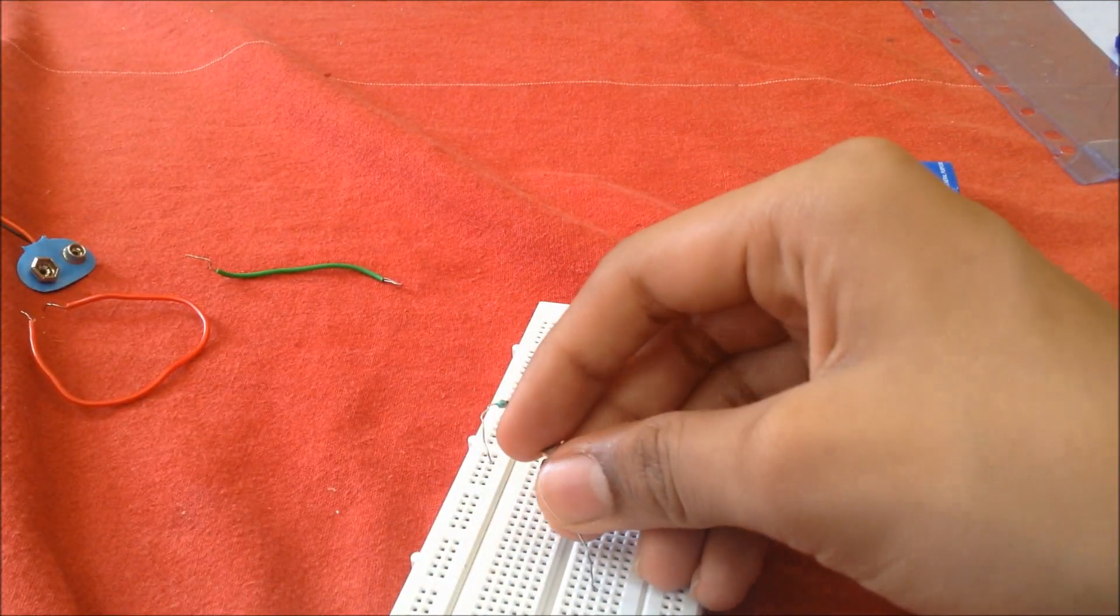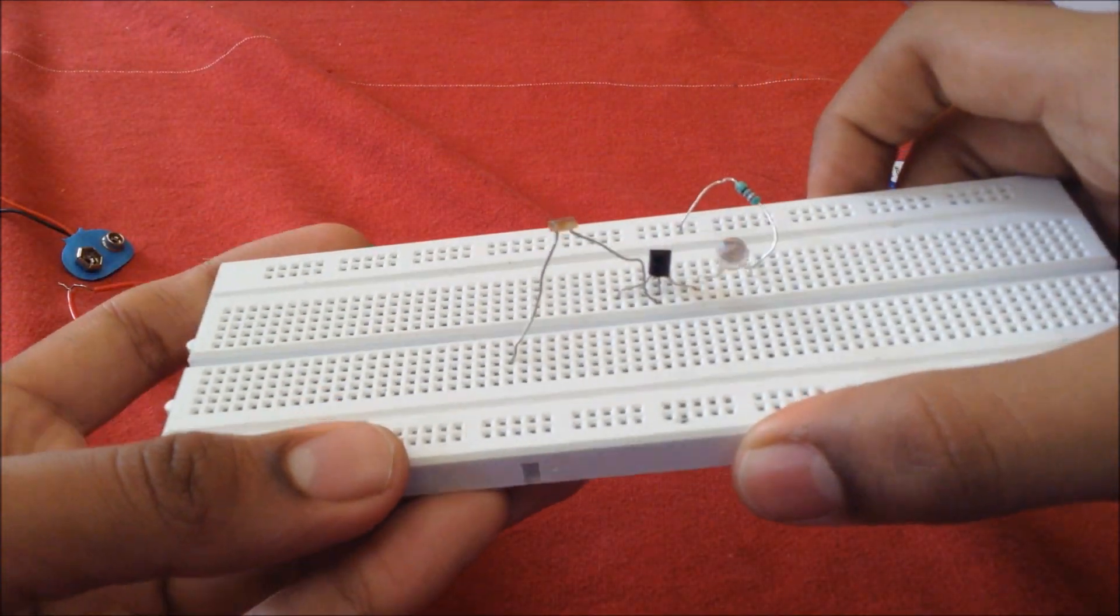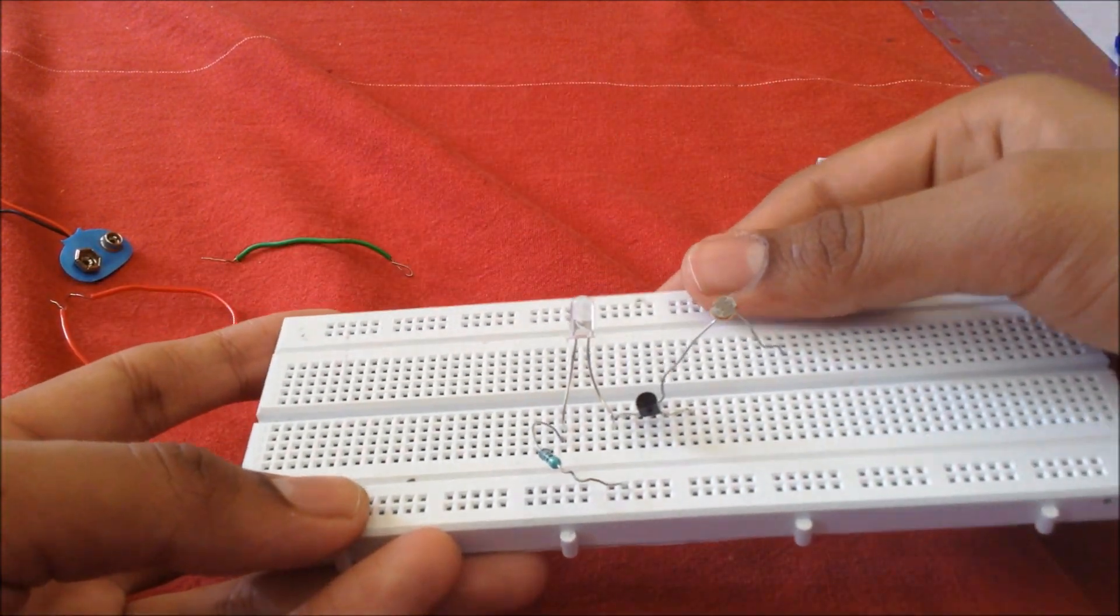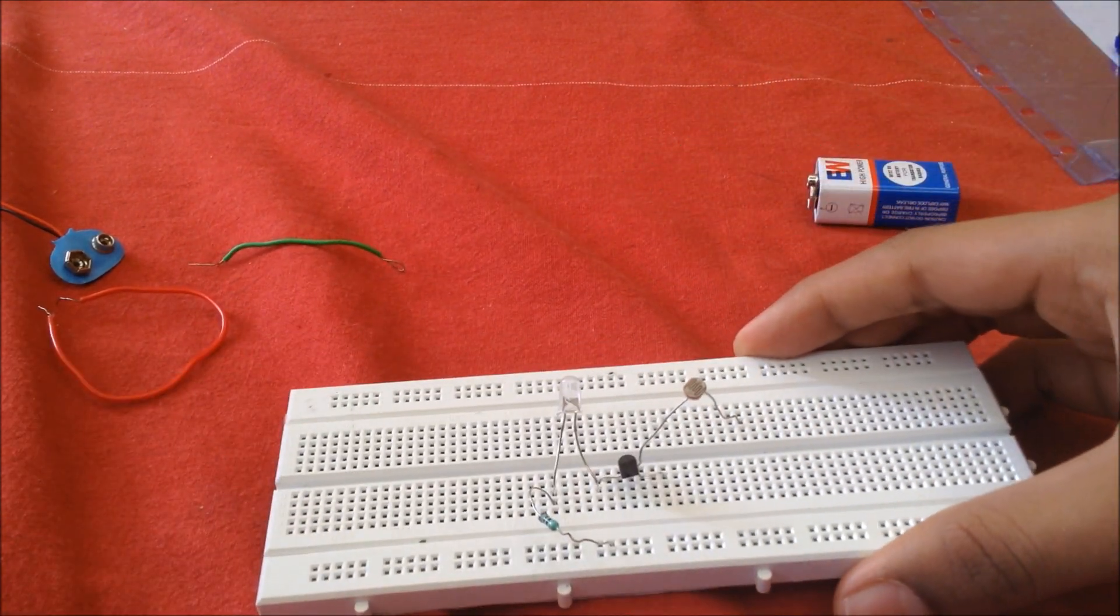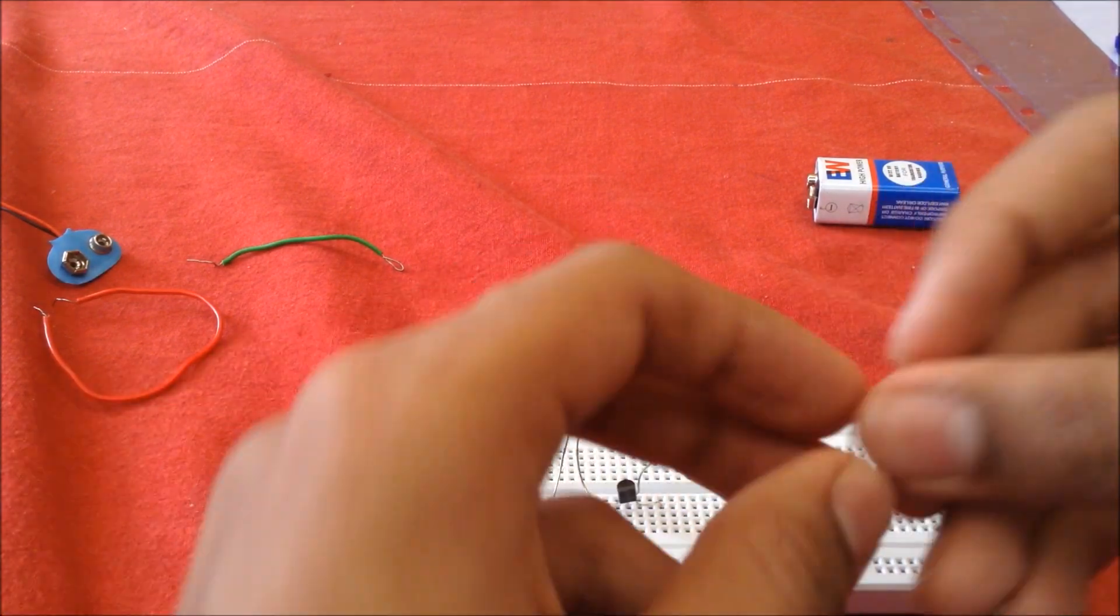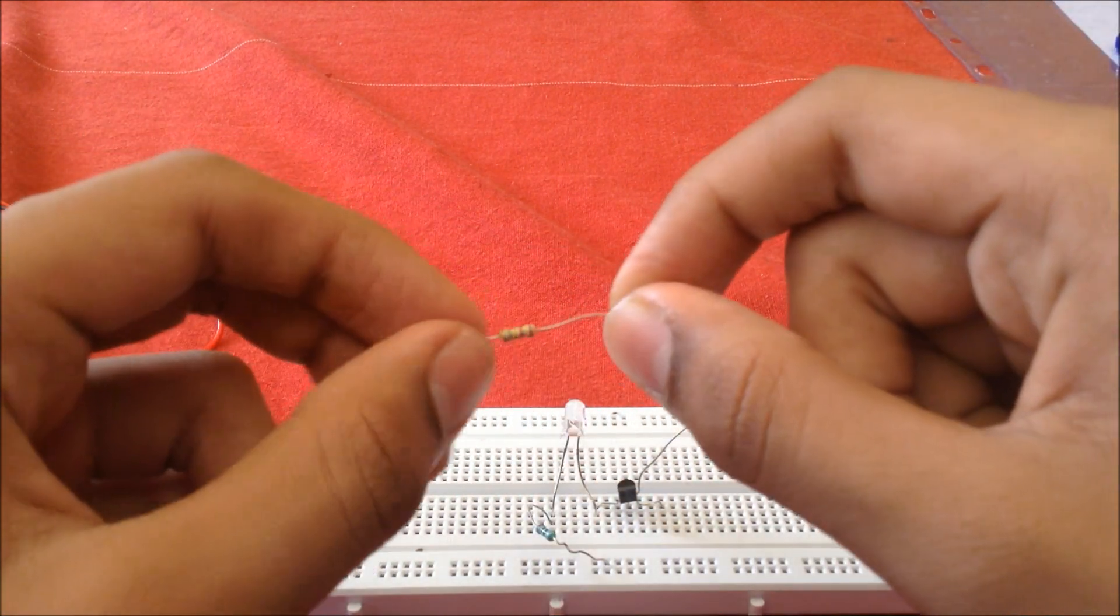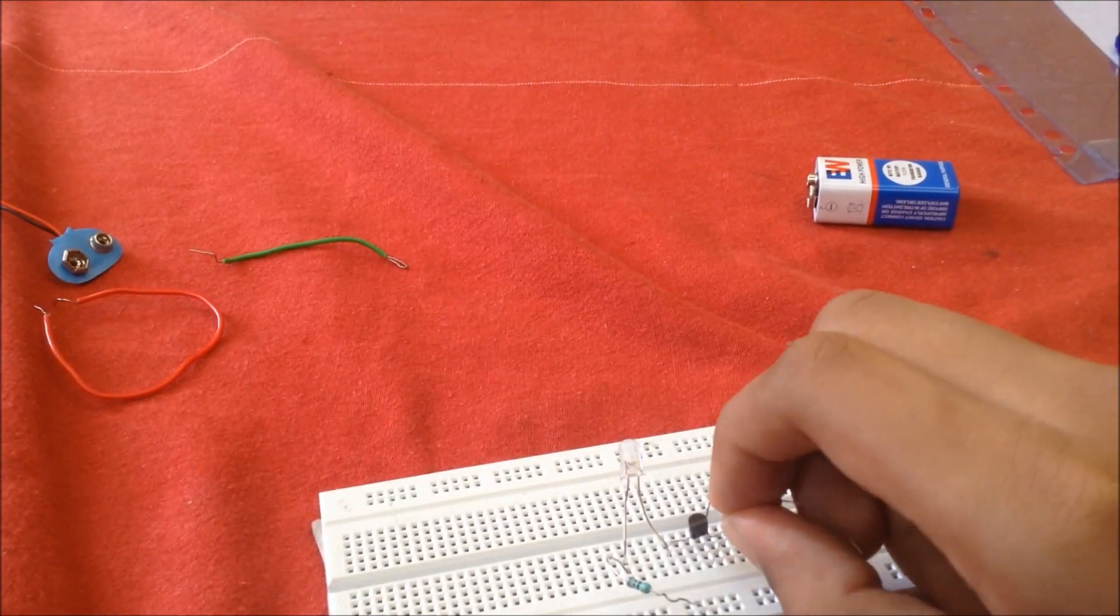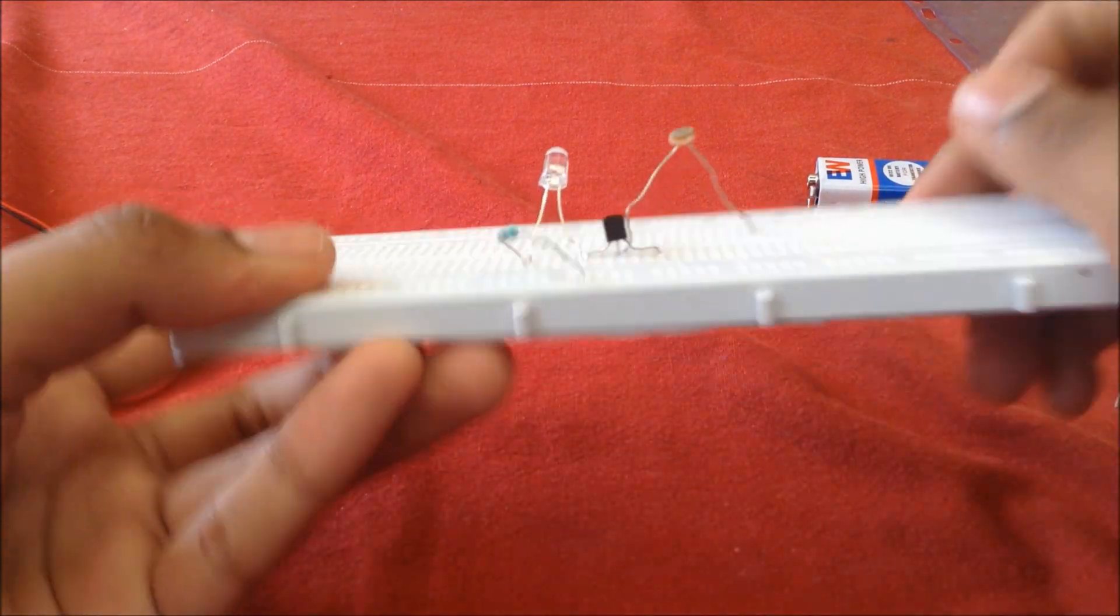Now we move on to the 220 kilo-ohm resistor. We attach it to the middle-most leg of the transistor, but on the opposite side of the LDR.